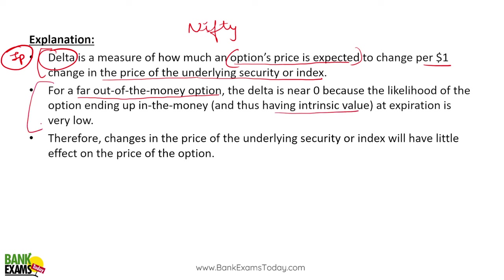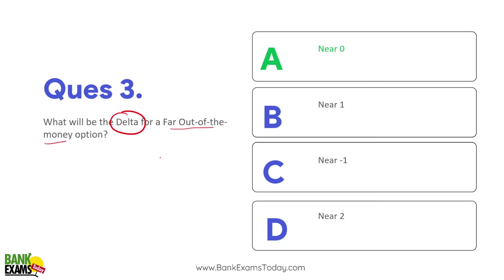For far out-of-the-money options, the chances of making profit and having intrinsic value are very low, therefore delta is zero. Changes in the price of the underlying security will have near zero effect on the price of a far out-of-the-money option.